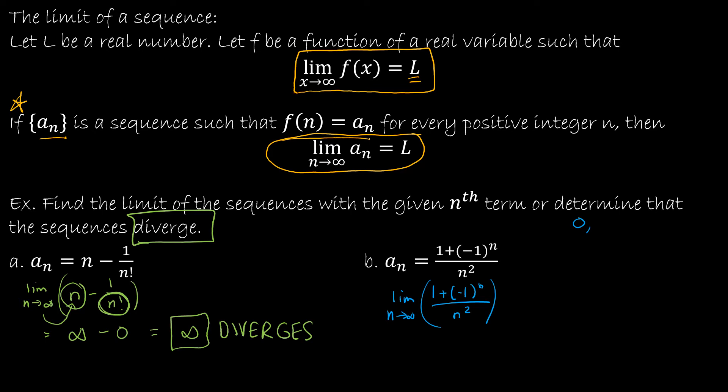Again, I could start finding the first several terms of the sequence. If I plug in 1, I'm going to get 1 plus negative 1 to the first, which is 0 — so it doesn't matter what the denominator is. If I plug in 2, I'm going to get 1 plus 1, over 2 squared, so 2 over 4, or 1 half. And then if I plug in 3, I get 0. And if I plug in 4, I get 2 over 16, or 1 eighth. And I know that every other term is going to be 0, and it looks like these values keep getting smaller.